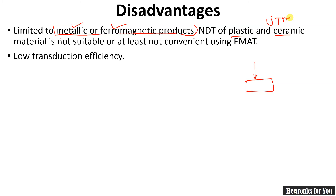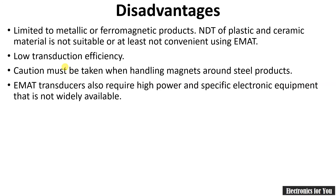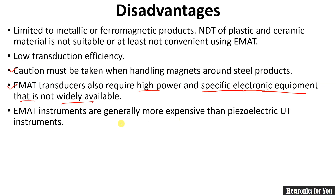The second disadvantage is low transduction efficiency. Caution must be taken while handling magnets around steel products. EMAT transducers also require high power and specific electronic equipment that is not widely available. Therefore, we can say that it is a more expensive method than ultrasonic thickness measurement.